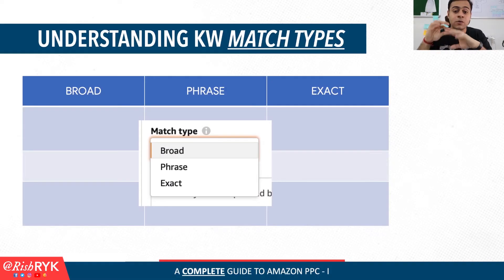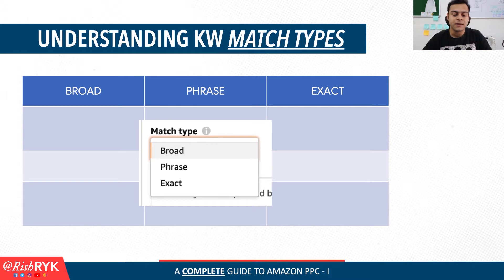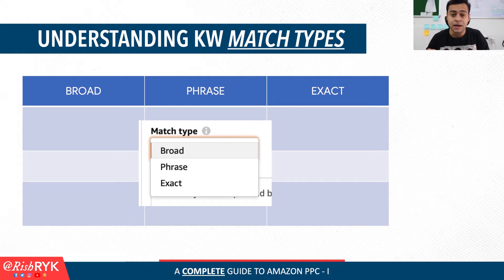Let's understand keyword match types. There are three keyword match types that you need to understand, and this is very important — pay attention to this very closely. There are three types of keyword match types: number one is broad, second is called phrase, and third is called exact.